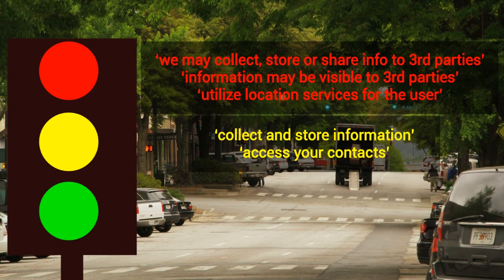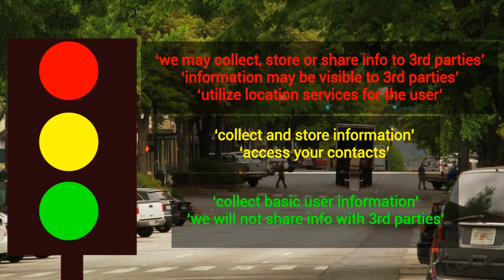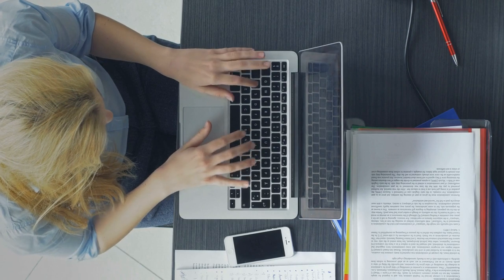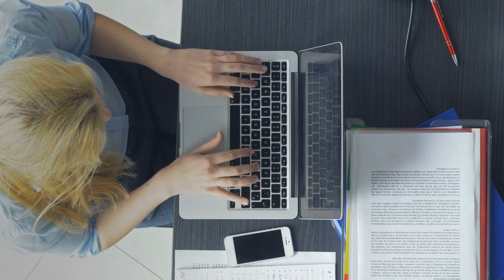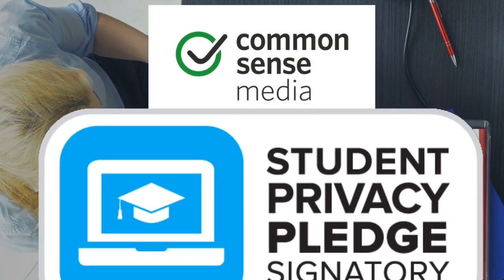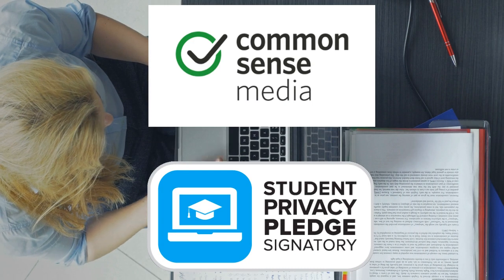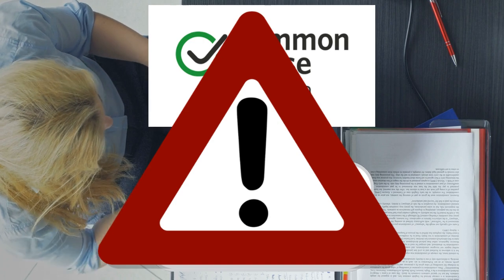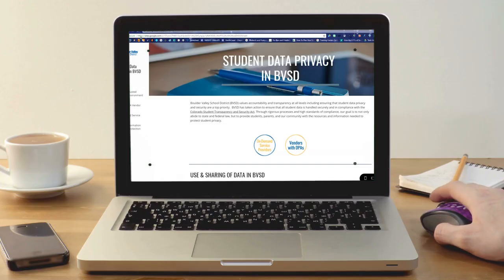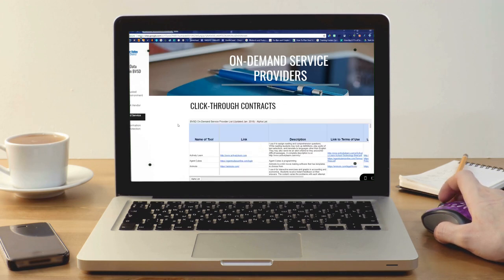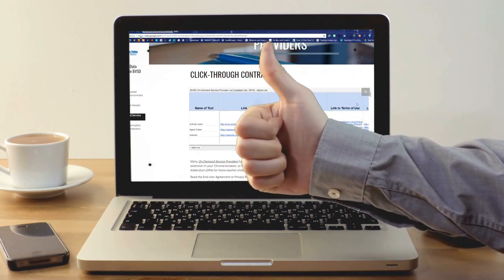Some statements are generally acceptable, like 'collect basic user information' or 'we will not share information with third parties.' In addition to looking for these common phrases, you can also consult many excellent resources like the Common Sense Privacy Evaluation or the Student Privacy Pledge. Remember that these can be used as a guide, but that there is no fail-safe way to ensure that each resource is accurate and up-to-date at all times. If you want to take a look at previously reviewed on-demand service providers being used throughout the district, this list is always available on the BVSD Student Data Privacy website.